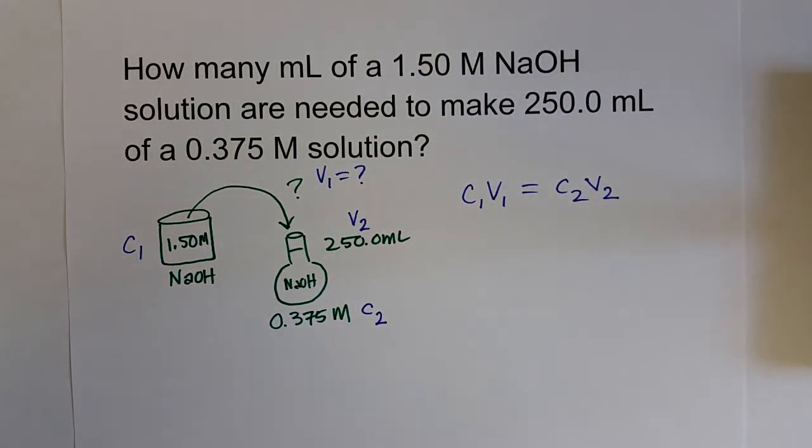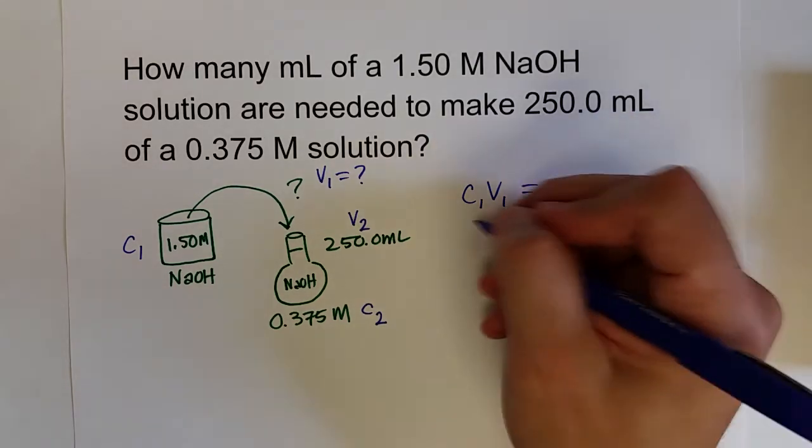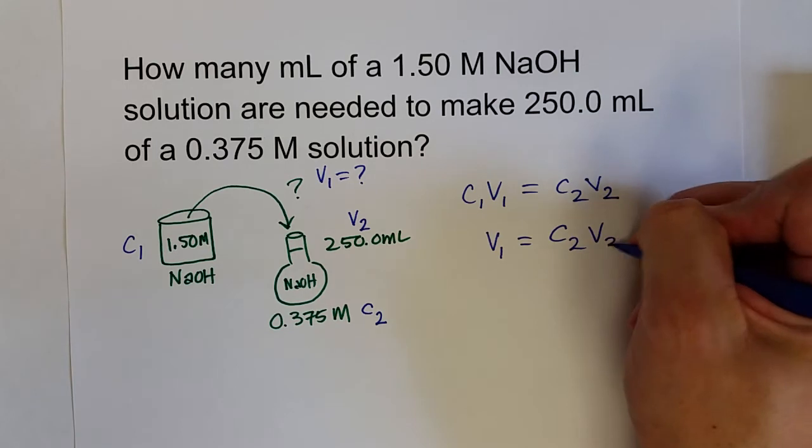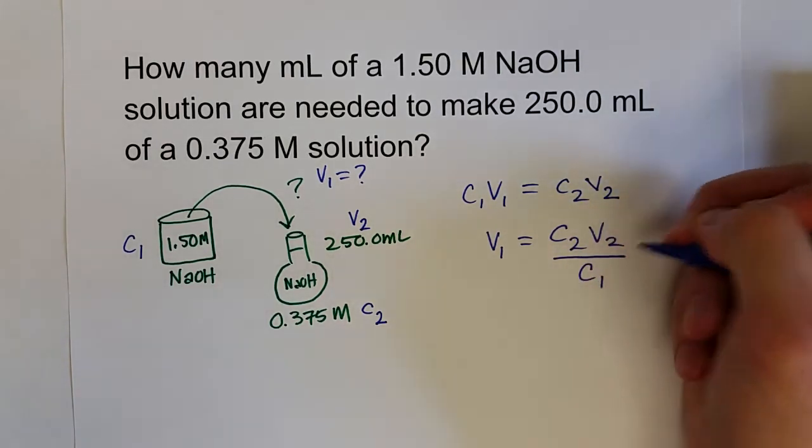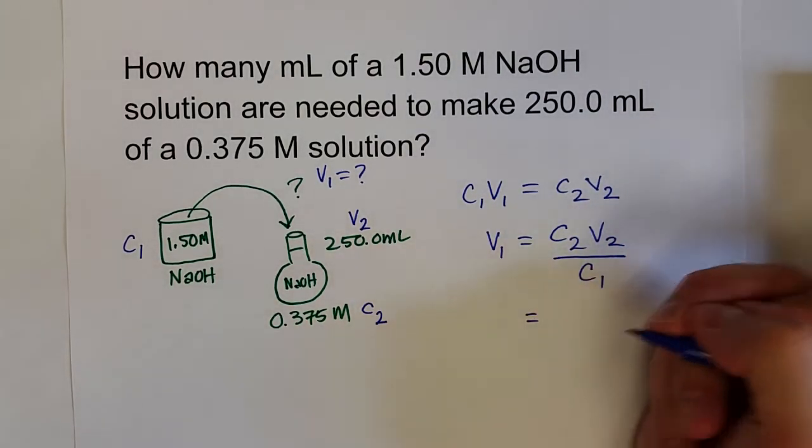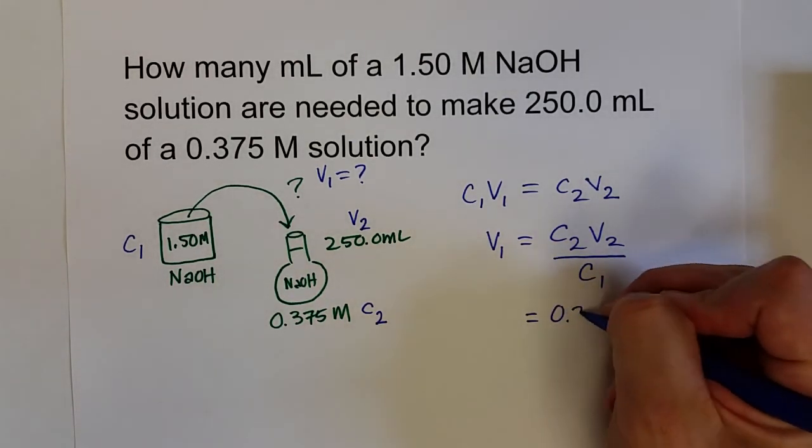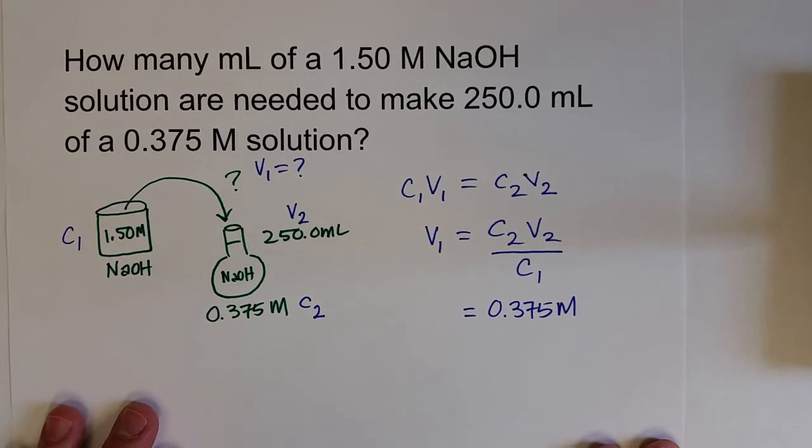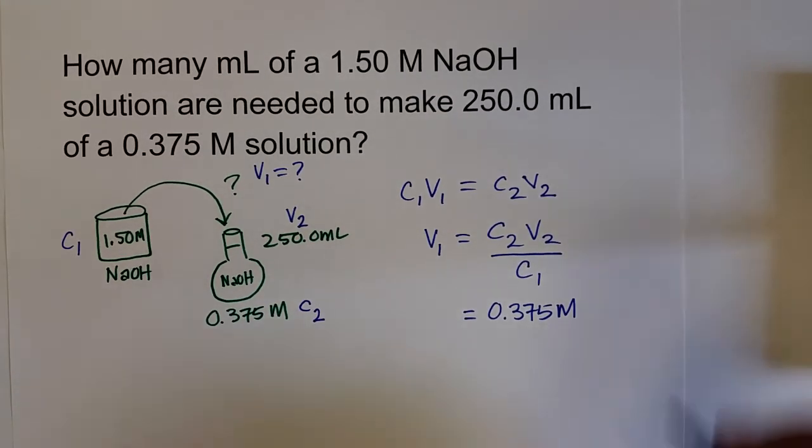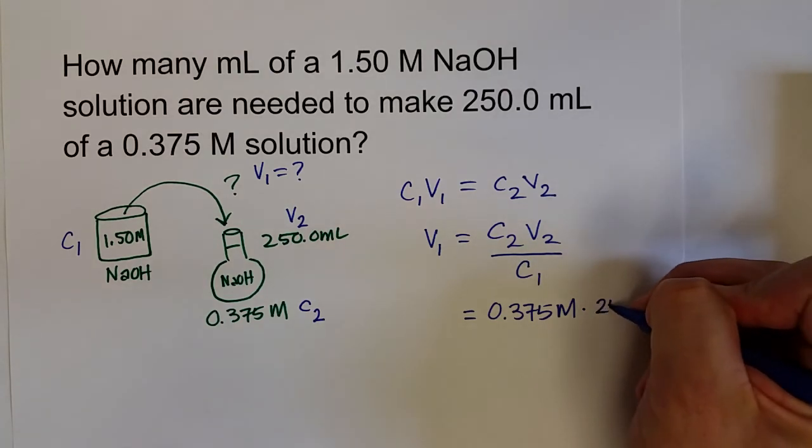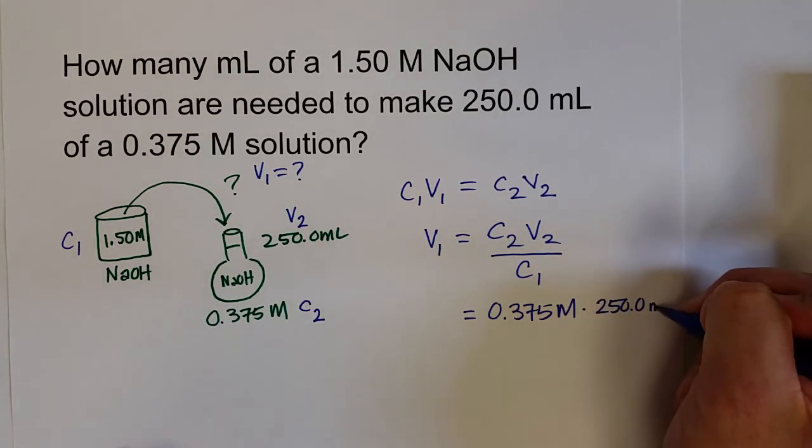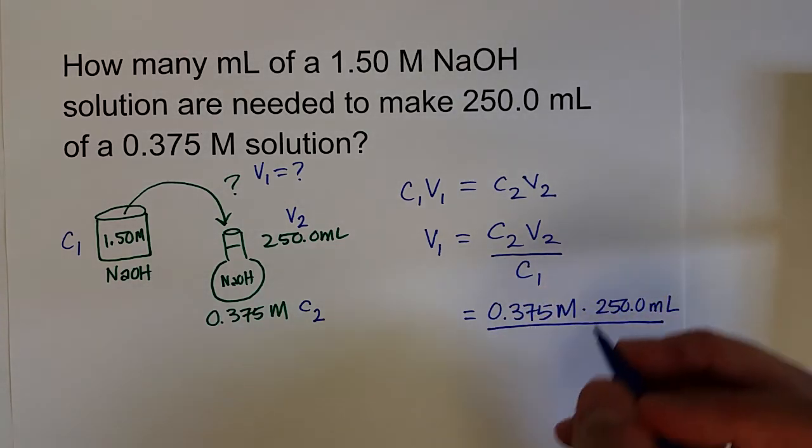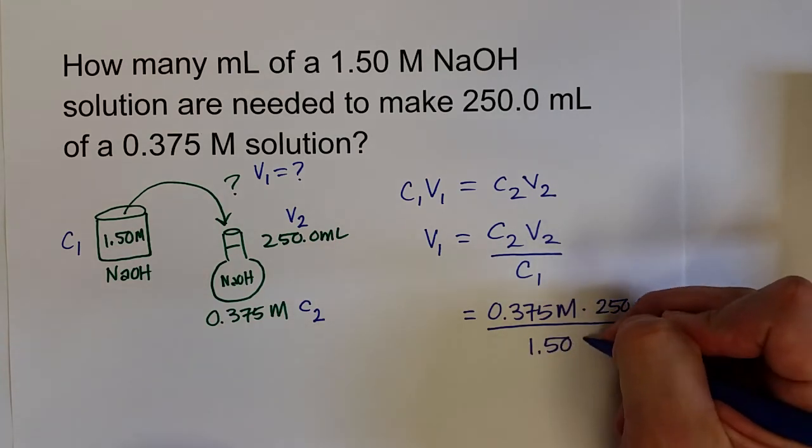To solve for V1, I need to divide both sides by C1. V1 equals C2 V2 over C1. Now I just need to input my values: C2, 0.375 molar, V2 is 250.0 milliliters, divided by C1, 1.50 molar.